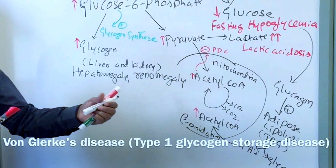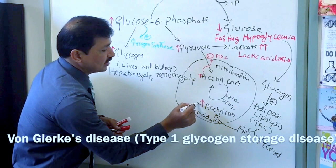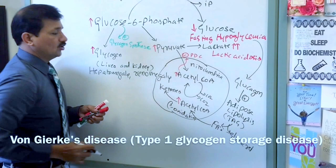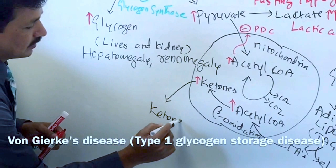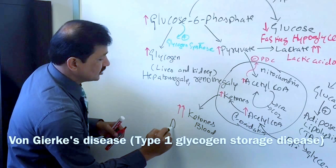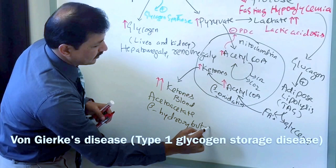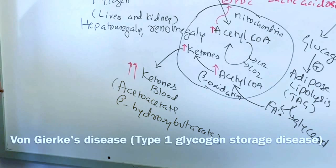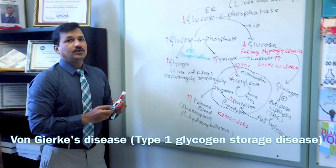When acetyl-CoA increases, since it is an energy-rich molecule worth 12 ATPs, it is converted within the mitochondria to ketone bodies via ketone body synthesis. Ketone bodies — acetoacetate and beta-hydroxybutyrate — are acidic molecules. Increasing ketone bodies in the blood will lead to ketoacidosis.